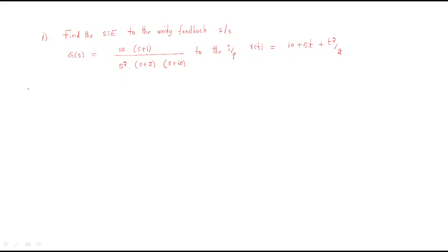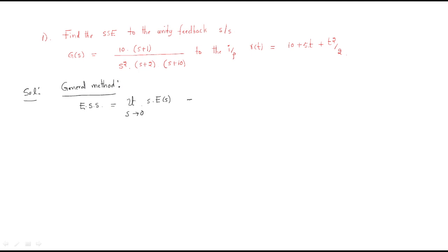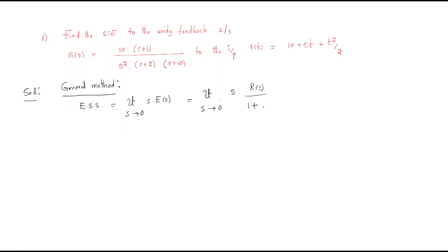We have two procedures to solve this problem. First, we will discuss the general method. The steady state error general method formula is: limit as s tends to 0 of s·E(s), which is also written as limit s→0 of s·R(s) / [1 + G(s)].